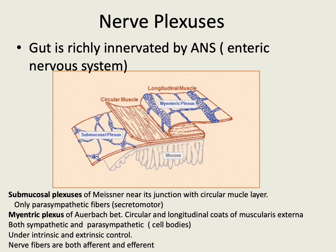The gut is richly innervated by the autonomic nervous system, and we call it the enteric nervous system. The nerve fibers are present in the form of two distinct plexuses. The first is the submucosal plexus of Meissner, which lies in the submucosa near its junction with the circular muscle layer and has only parasympathetic fibers that are secretomotor in nature. The second is the myenteric plexus of Auerbach, which lies between the circular and longitudinal layers of the muscularis externa and has both sympathetic and parasympathetic nerve fibers, but only the cell bodies of parasympathetic nerve fibers are present. These plexuses are under the control of both intrinsic and extrinsic influences, and the nerve fibers in them are both afferent and efferent.